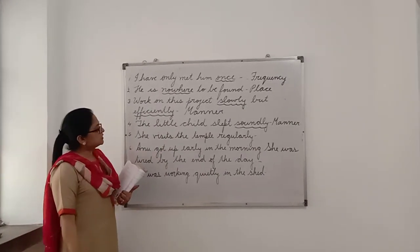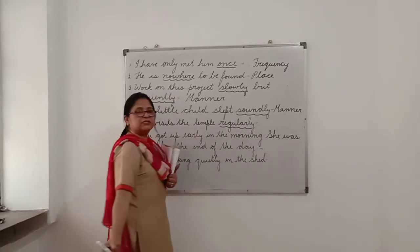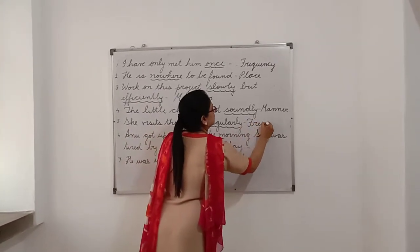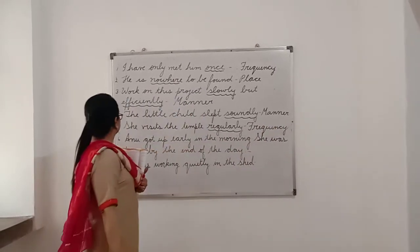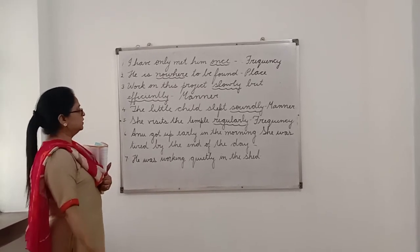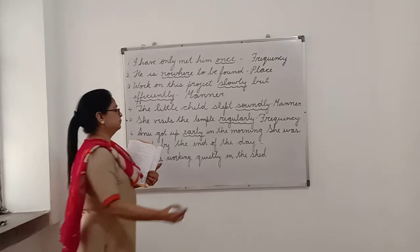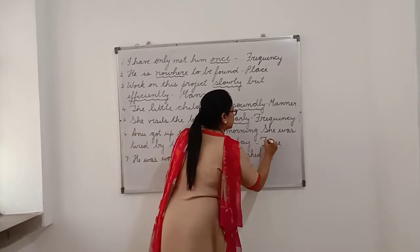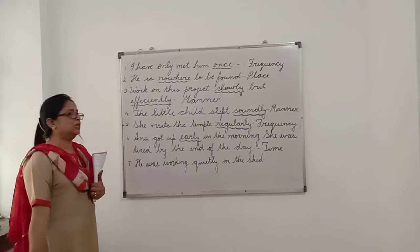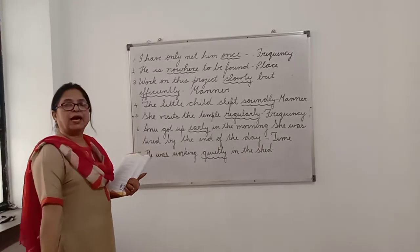Number 5: 'She visits the temple regularly.' — Here 'regularly' is an adverb and it is an adverb of frequency. Number 6: 'Anu got up early in the morning. She was tired by the end of the day.' — Here 'early' is an adverb and it is an adverb of time. And the last one: 'He was working quietly in the shed.' — Here 'quietly' is an adverb and it is again an adverb of manner.